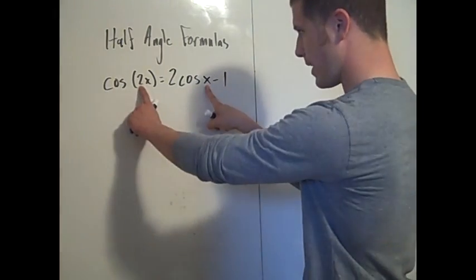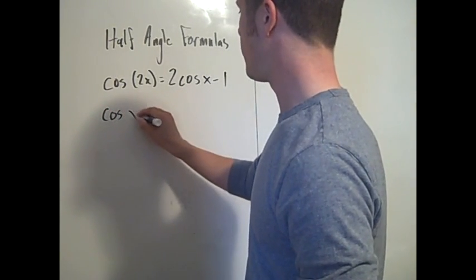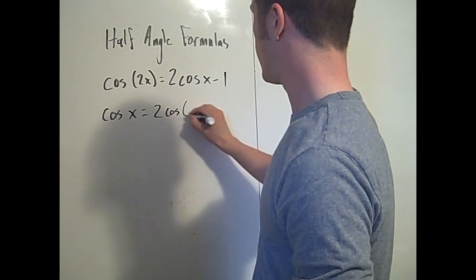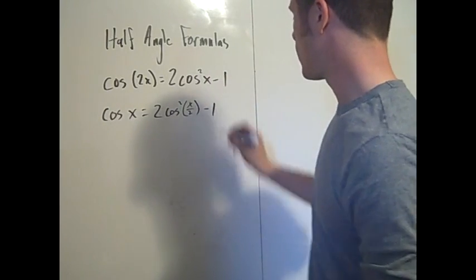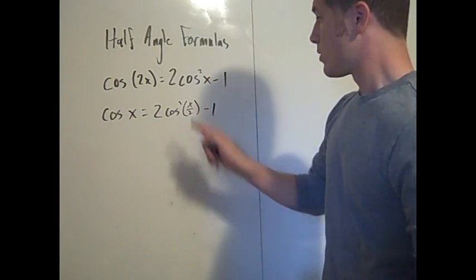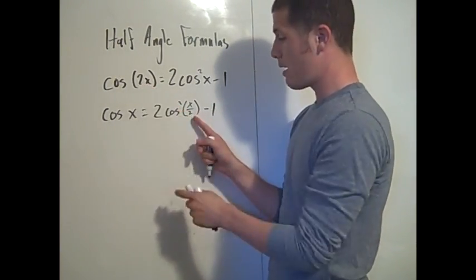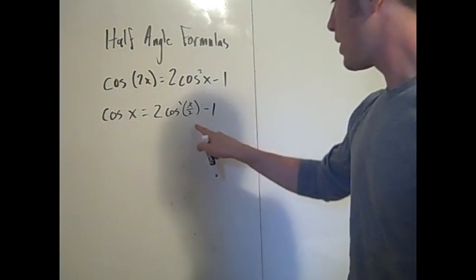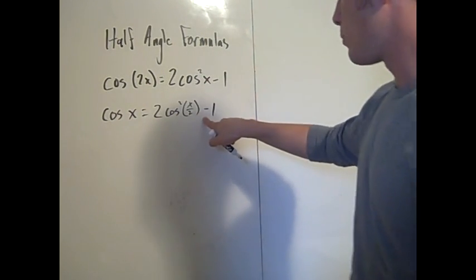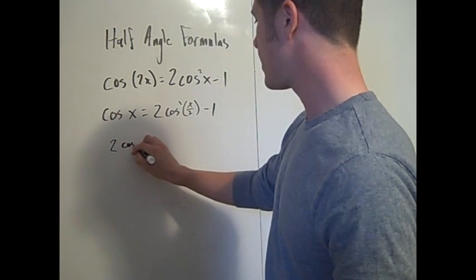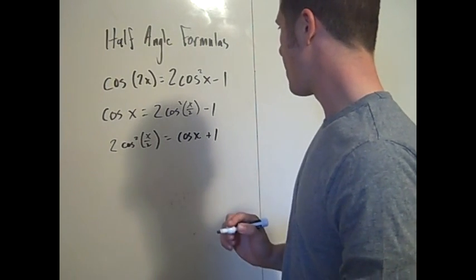Note that x is exactly half of 2x. So equivalently, we can say cosine x equals 2 cosine squared of x/2 minus 1. To isolate cosine x/2, add 1 to both sides to get 2 cosine squared of x/2 equals cosine x plus 1.